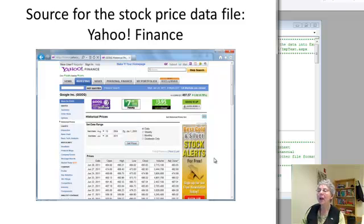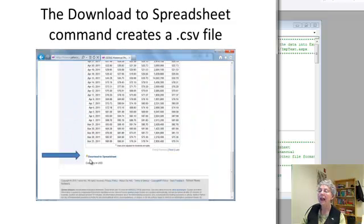And I got the data from Yahoo Finance. This is an example of what the interface looks like on Yahoo Finance. And you can pick your time period, your intervals, and so on for just about any common stock that's listed. And once you've got your values set, you can download them to a spreadsheet.